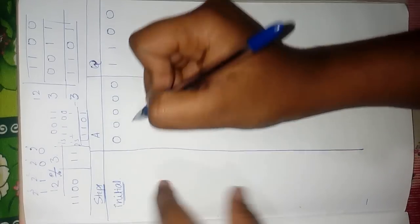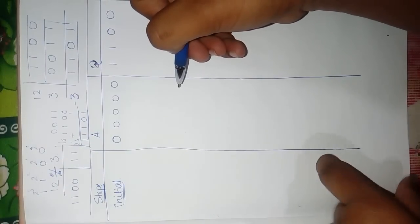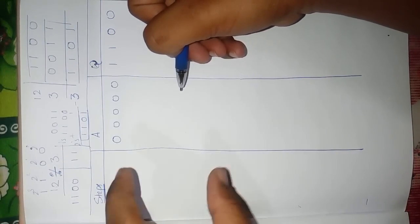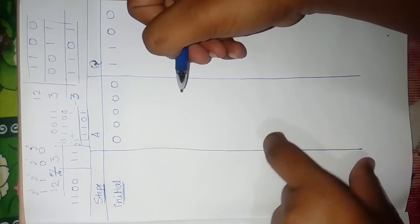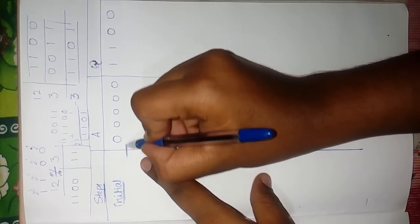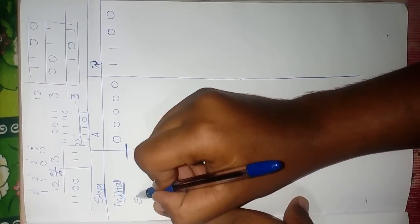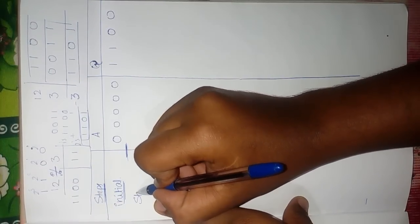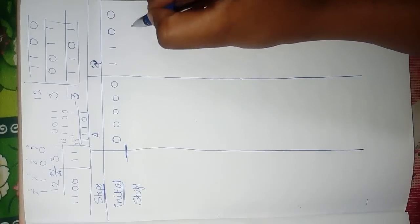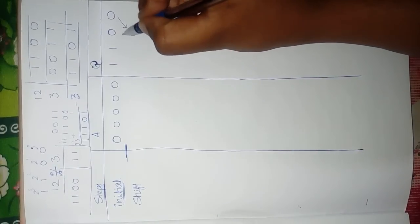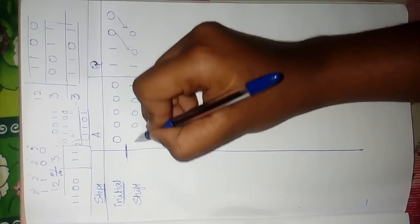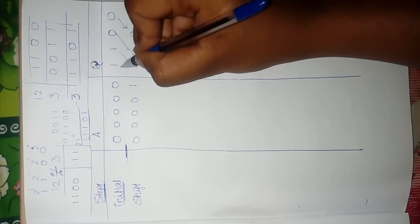We'll call each iteration a cycle. You have to repeat certain steps a particular number of times to get the answer. Now we start the first cycle. The first step is to left-shift A and Q. So 0 comes here, 0 comes here, 1 comes here — 1 0 0 0 0 — it's just shifting everything to the left. There will be an empty block on the right.